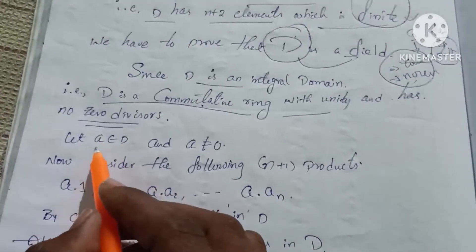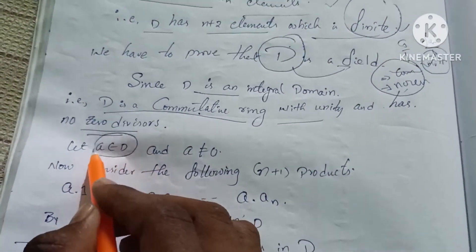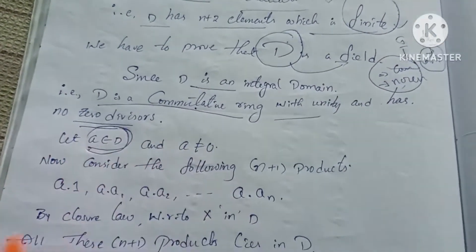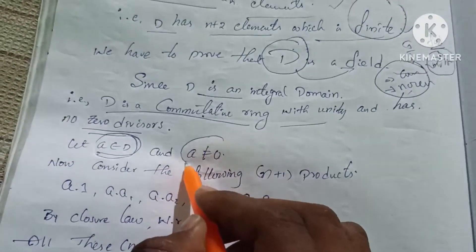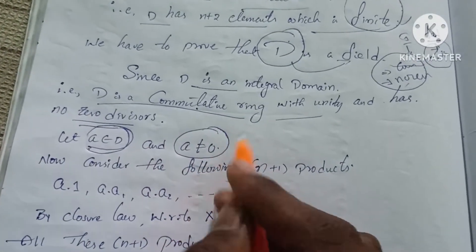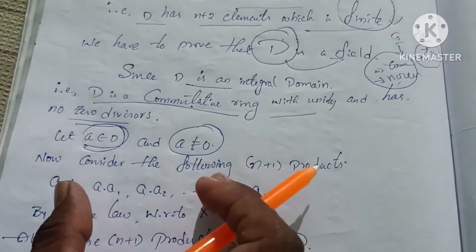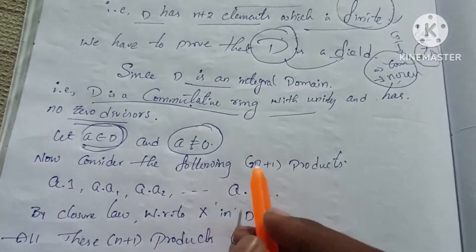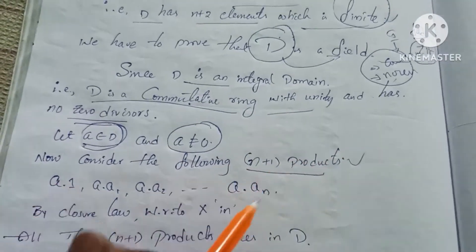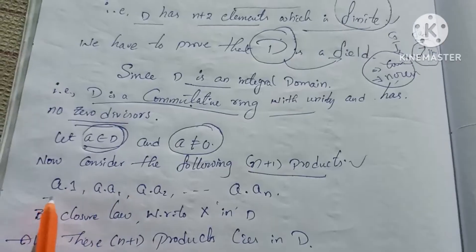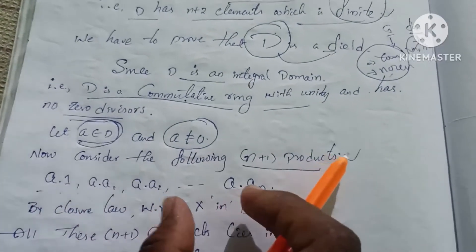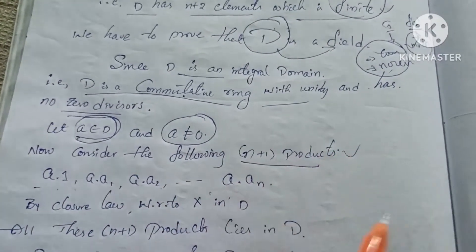Let a belong to D, where a is not equal to zero. Consider the following n+1 products: a·1, a·a1, a·a2, ..., a·an.